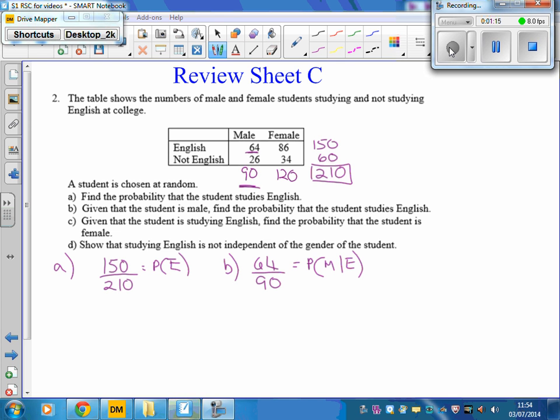Part C, given that the student is studying English, find the probability that the student is female. So we're only interested in the students that are studying English. So that will be out of the 150. And we want that the student is female. There are 86 students that are studying English and female, so it is 86 out of the 150. And that is the probability that the student is female given that they study English.